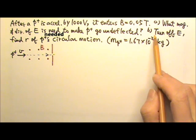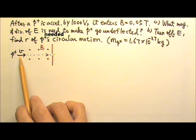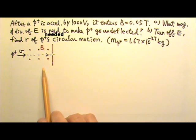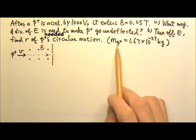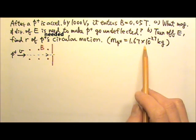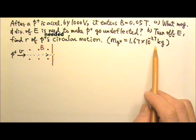Part B: The electric field is then turned off, so the beam of protons does circular motion in this region. Find the radius of the proton's circular motion. The mass of a proton is 1.67 × 10^-27 kilograms.